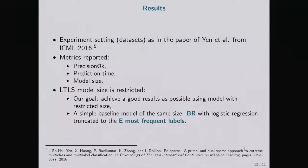Let me briefly comment on our results. We applied the experimental setting from the paper about PDSPARS, using the same datasets. We report metrics such as precision at K, prediction time, and model size. We use LITTLES with a linear regression model for predicting edge weights. The model size of LITTLES is very restricted, unlike our competitors. To make the comparison better, we also checked results of a simple baseline algorithm of the same size.